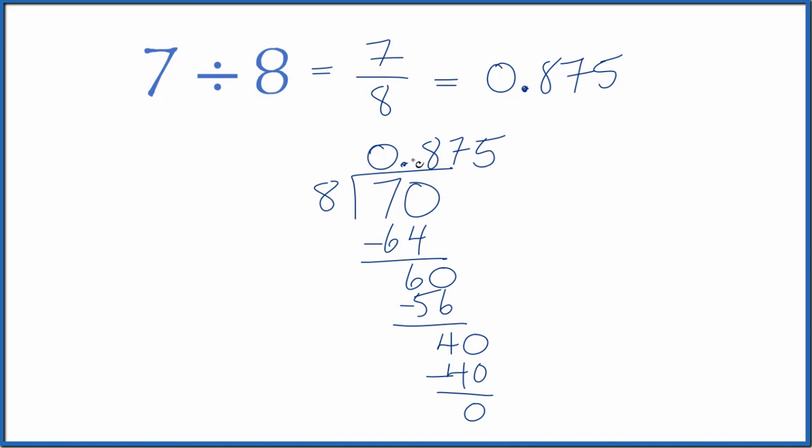7 divided by 8, 0.875. And that's what we found before. This is Dr. B, dividing 7 by 8. Thanks for watching.